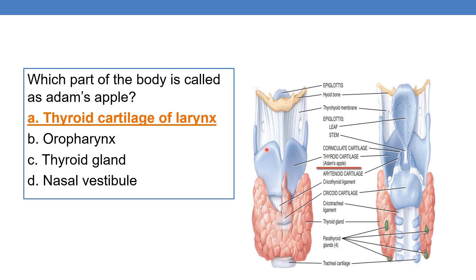Here you can see this is the diagram of the thyroid cartilage. This is the cartilage which gives the triangular shape to the larynx. Adam's apple is responsible for the triangular shape of the larynx, and the part of the body called as Adam's apple is thyroid cartilage of larynx. Option is A.